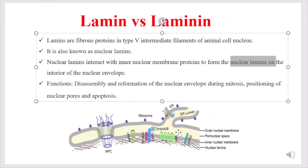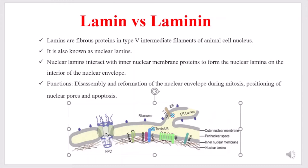This nuclear lamina helps in the disassembly and reformation of the nuclear envelope during mitosis. The lamin protein undergoes phosphorylation and dephosphorylation, which drives the disassembly and reformation of the nuclear envelope during mitosis. It also helps in the positioning of nuclear pores, and it plays a role in apoptosis — programmed cell death.